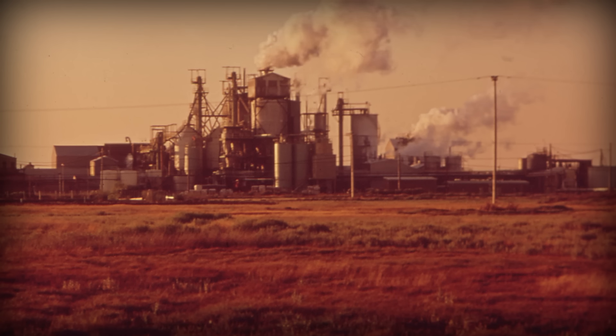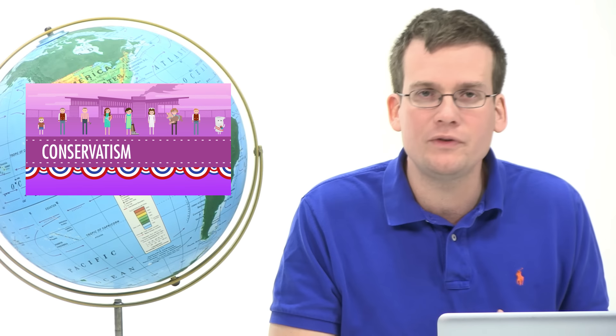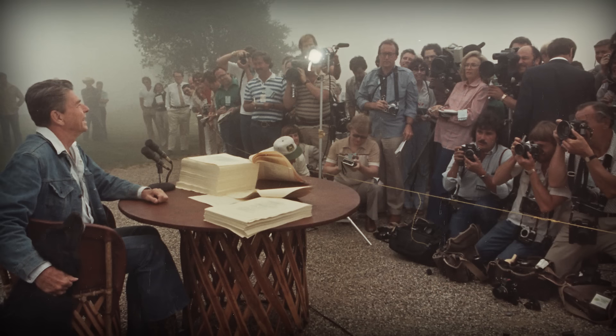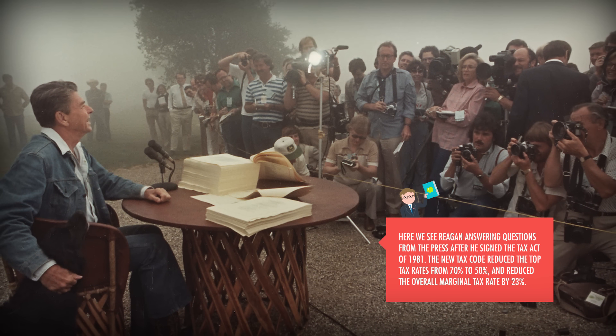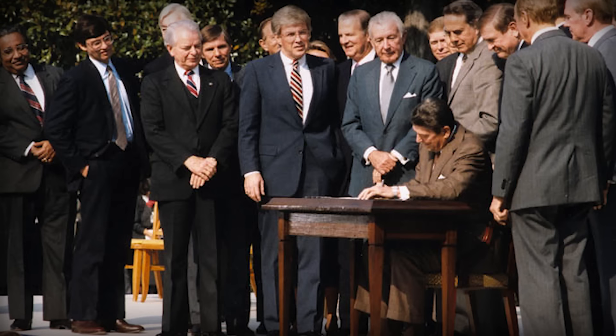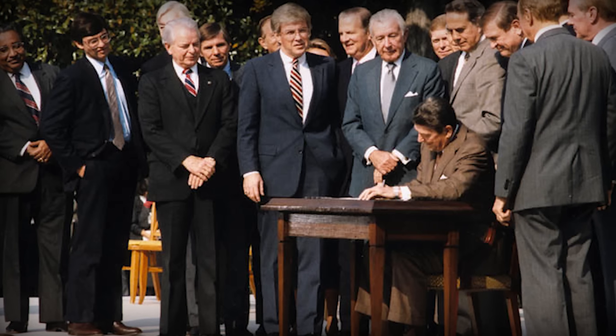It would curtail union power, reduce federal regulation of industry and the environment, and most of all, lower taxes. All these ideas were a big part of the Reagan revolution, but as we know, much of what he proposed had been brewing for years during the rise of conservatism. So what aspects of this economic Bill of Rights actually ended up happening? Well, his main accomplishment was lowering taxes. In 1981, Reagan persuaded Congress to lower the top tax rate from 70 percent to 50 percent. In 1986, Congress went much further with the Tax Reform Act that lowered the top income tax rate to 28 percent.